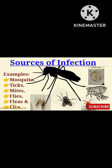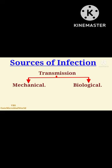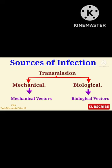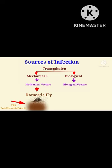Transmission may be mechanical or biological, and the vectors are called mechanical vectors and biological vectors respectively. A good example of a mechanical vector is the domestic fly, which mechanically transmits the typhoid bacillus. An example of a biological vector is the mosquito.